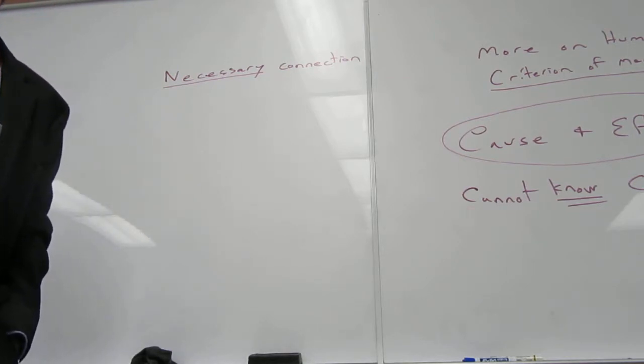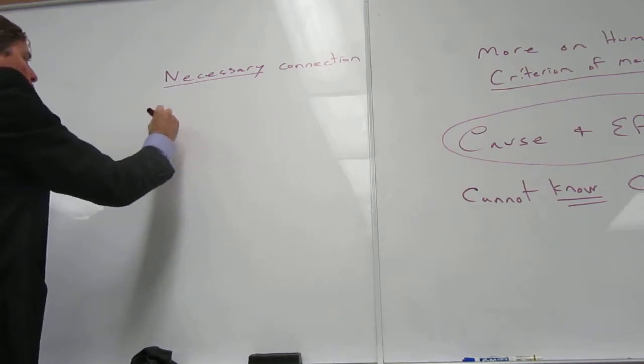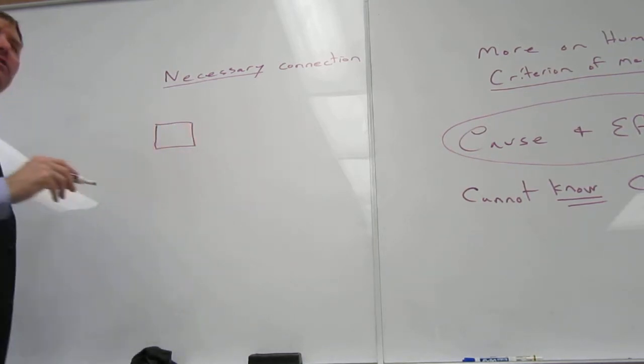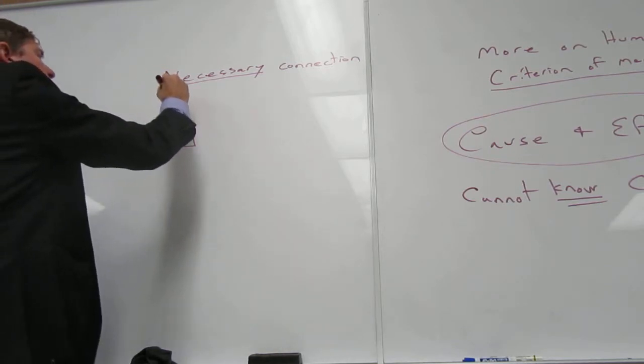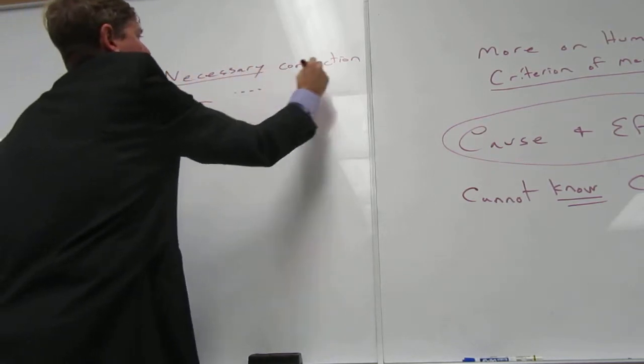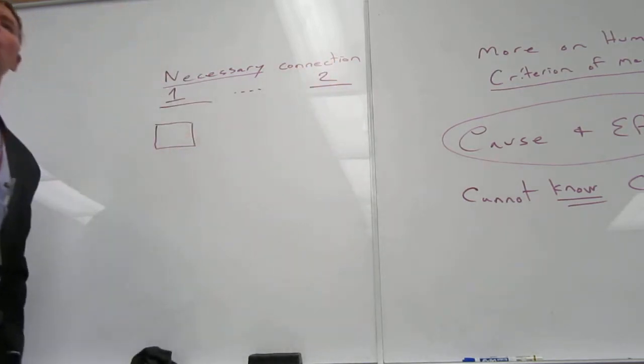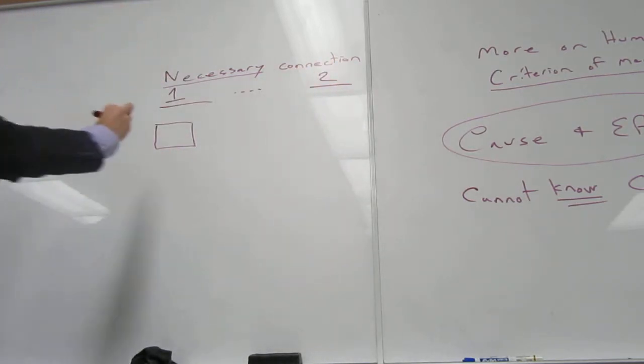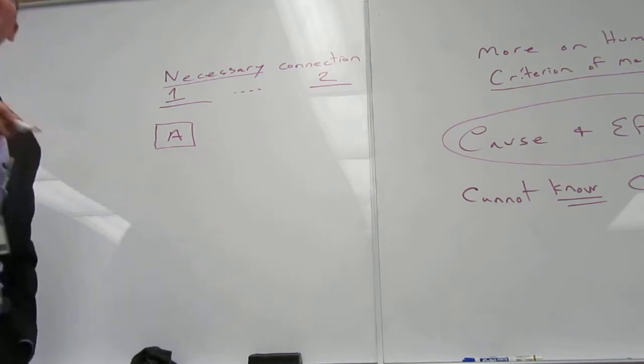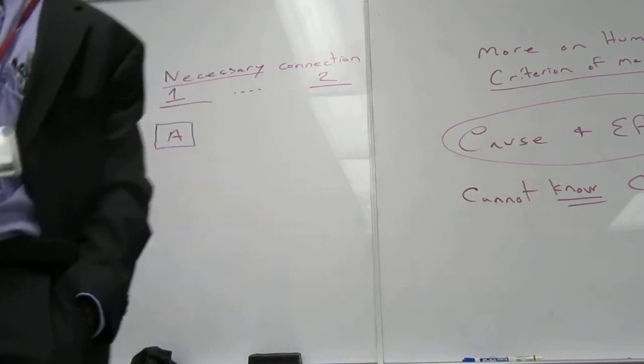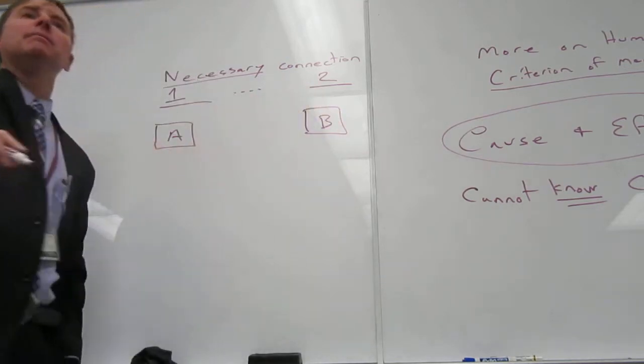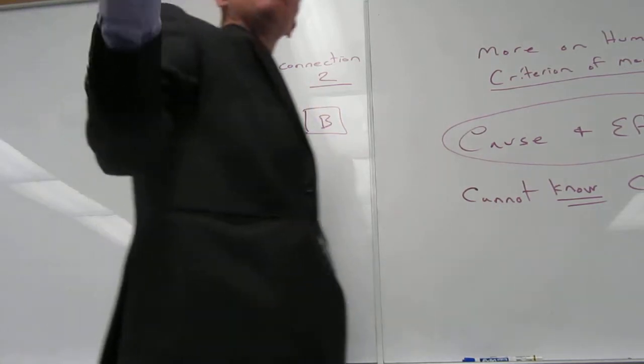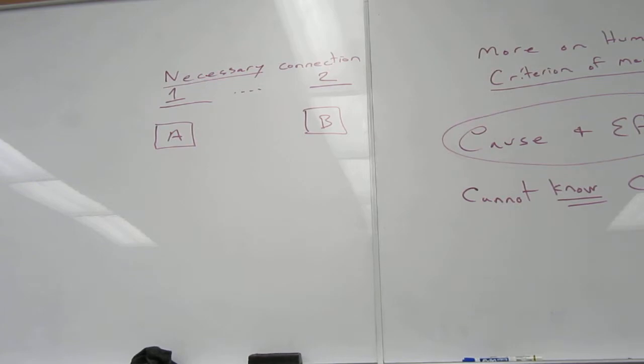He says, this is what we actually witness when we think we're witnessing cause and effect. In one instant, we'll call this instant one, we'll call this instance two. We will see an event that we call A happen. And shortly thereafter, we will see B happen. Now, if this succession of events only happened once, we would probably think nothing of it.